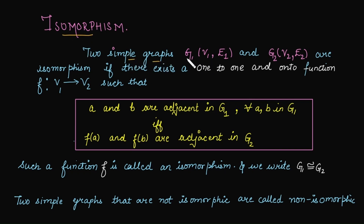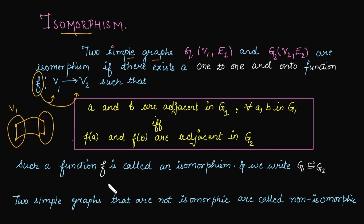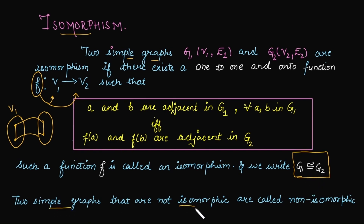Isomorphism. Two simple graphs G1 and G2 are isomorphic if there is a function between the vertex sets from graph G1 to G2 such that if any two vertices in the V1 set are adjacent, then whatever images we get of these vertices in V2, they must also be adjacent. This is the meaning of isomorphism. If such a function exists, we say that G1 is isomorphic to G2. If two simple graphs are not isomorphic, it is called a non-isomorphic graph.